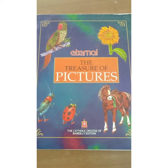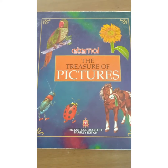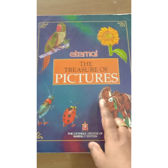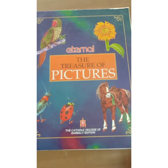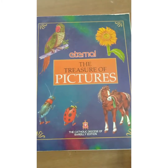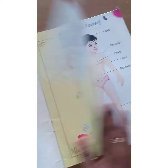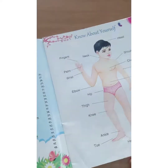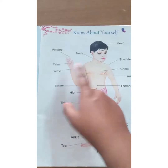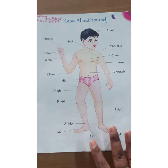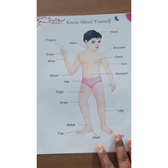So kids, this is your GK book — Eternal The Treasure of Picture. This is your GK book, and in this GK book the first chapter is Know About Yourself. This is the first chapter which we are going to do today.